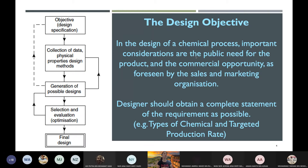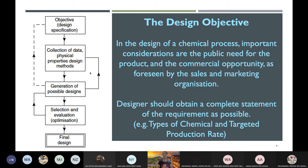The designer must obtain a complete statement of requirements. In your case, this is already given: the type of chemical and the targeted production rate. Before starting to build a plant, you need to find out everything. The design objective includes type of chemical and targeted production rate. From the diagram, there are several stages to reach the final design: specifying objectives, data collection (physical properties, design methods), and generation of possible designs.